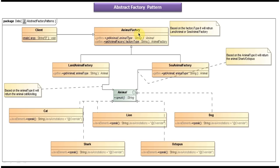AnimalFactory acts as an abstract factory — it is the super factory of LandAnimalFactory and SeaAnimalFactory. It has a getAnimalFactory method, so based on the factory type passed, it will either return a LandAnimalFactory object or SeaAnimalFactory object to the caller. If we pass factory type as 'sea' it returns a SeaAnimalFactory object; if we pass 'land' it creates and returns a LandAnimalFactory object. That is the class diagram of the sample code.